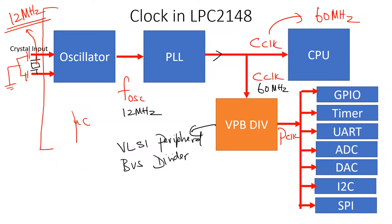So depending upon your choice, you can supply a suitable peripheral clock to all peripheral devices. It is this P-clock which supplies the clock frequency to all peripheral devices including GPIO, timer, UART, ADC, DAC, SPI, and I2C. All internal peripherals of LPC-2148 take this peripheral clock as input for their operation. You can also bypass and supply the same 60 MHz without dividing, by setting the VPB peripheral bus divider to 1, so the peripheral clock equals the CPU clock.